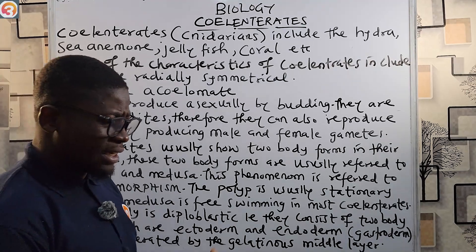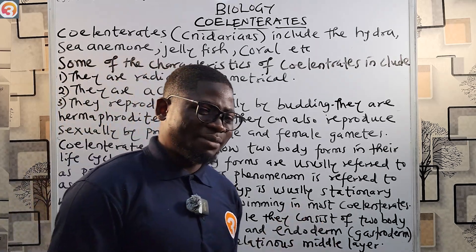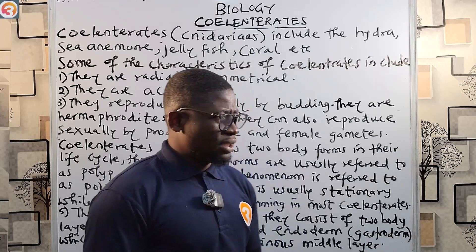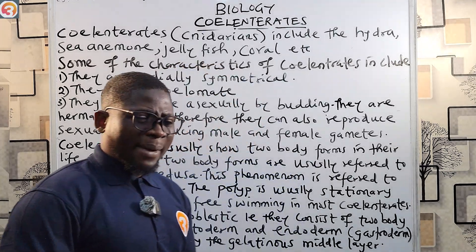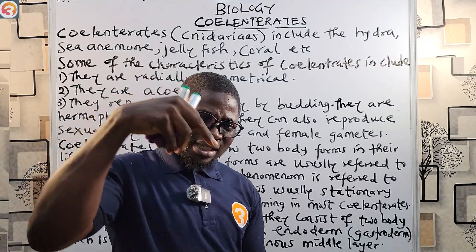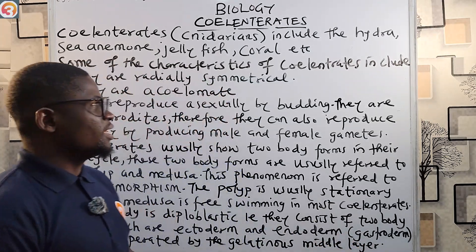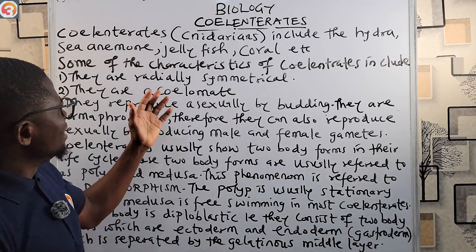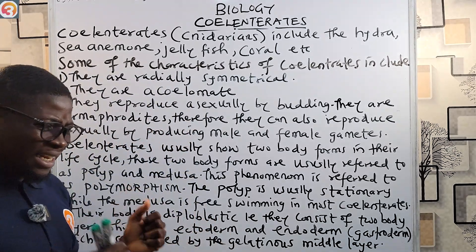Some characteristics of coelenterates: first, they are radially symmetrical. Radial symmetry means that the body can be cut into two identical halves at any plane or angle. This is one of the very primitive features of the phylum Coelenterata — they show radial symmetry.